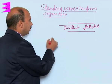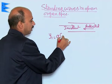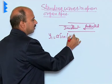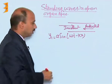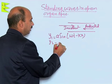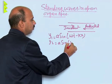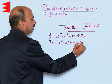We can take two equations: y₁ equals a sin(ωt - kx) for incident traveling left to right, and y₂ equals a sin(ωt + kx) for reflected.